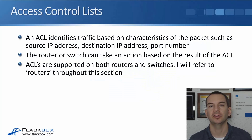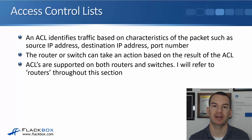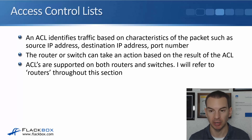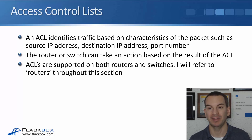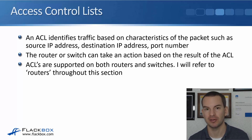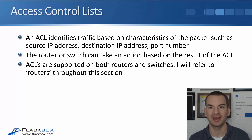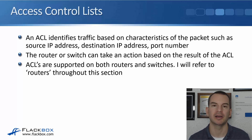In this lecture, you'll learn about ACLs - Access Control Lists. An ACL identifies traffic based on characteristics of the packet going through the router, such as its source IP address and/or its destination IP address and/or the layer 4 port number. The router or switch can then take an action based on the result of the ACL. ACLs are supported on both routers and switches, but I'll just refer to routers - it applies to switches as well.